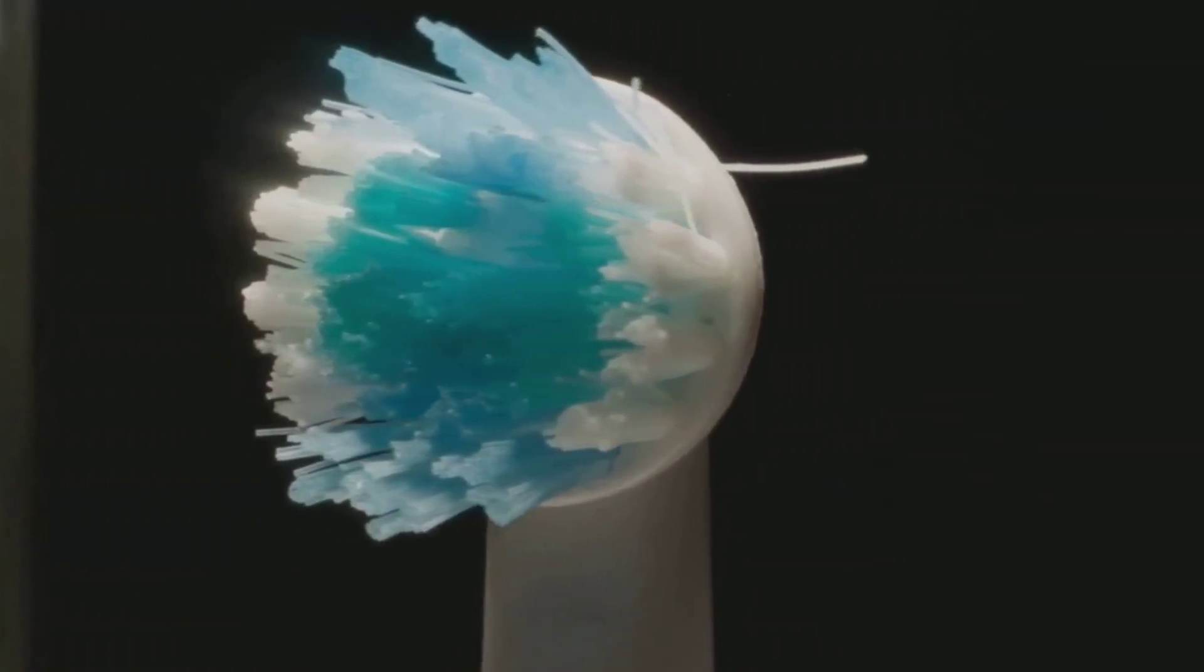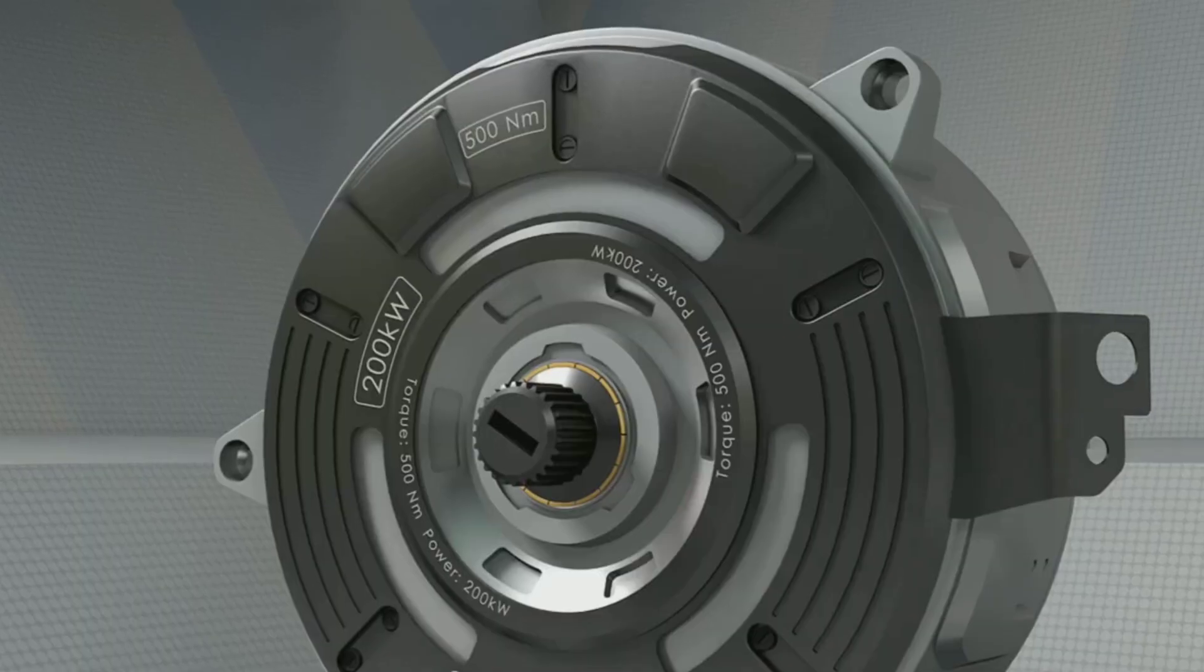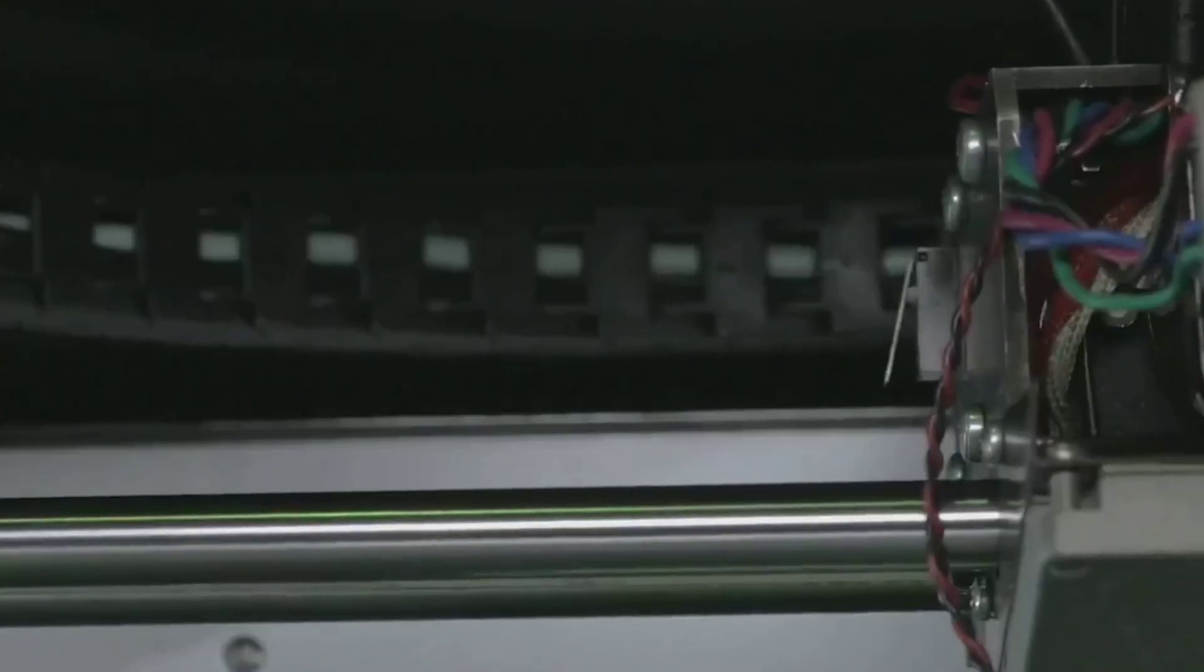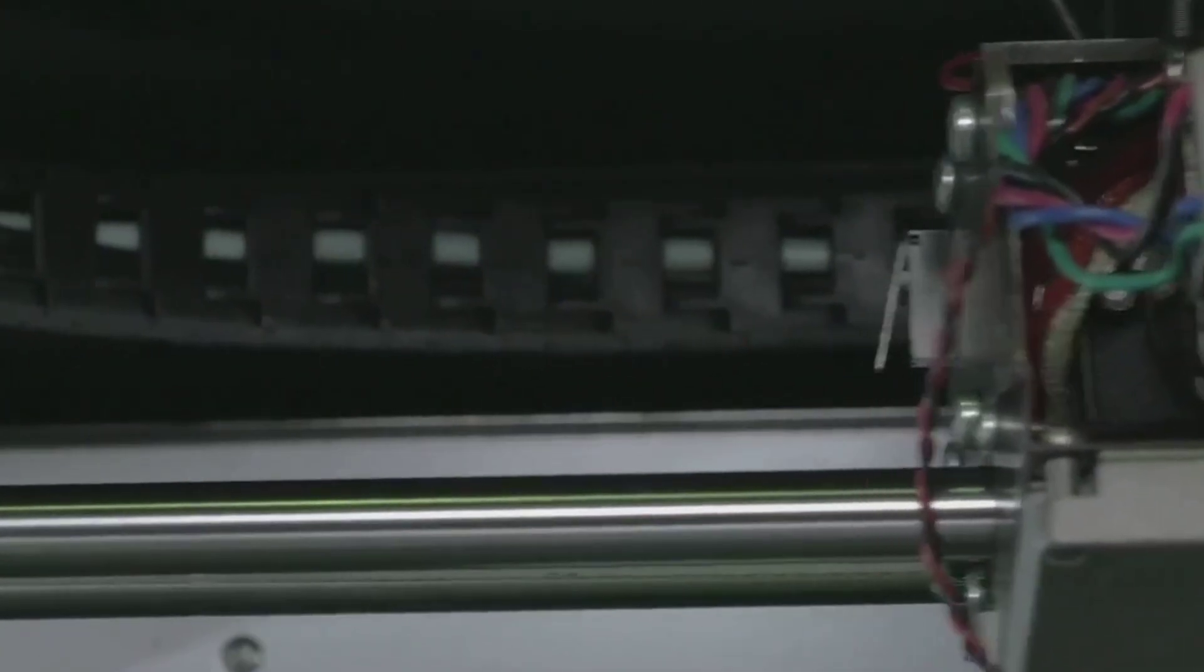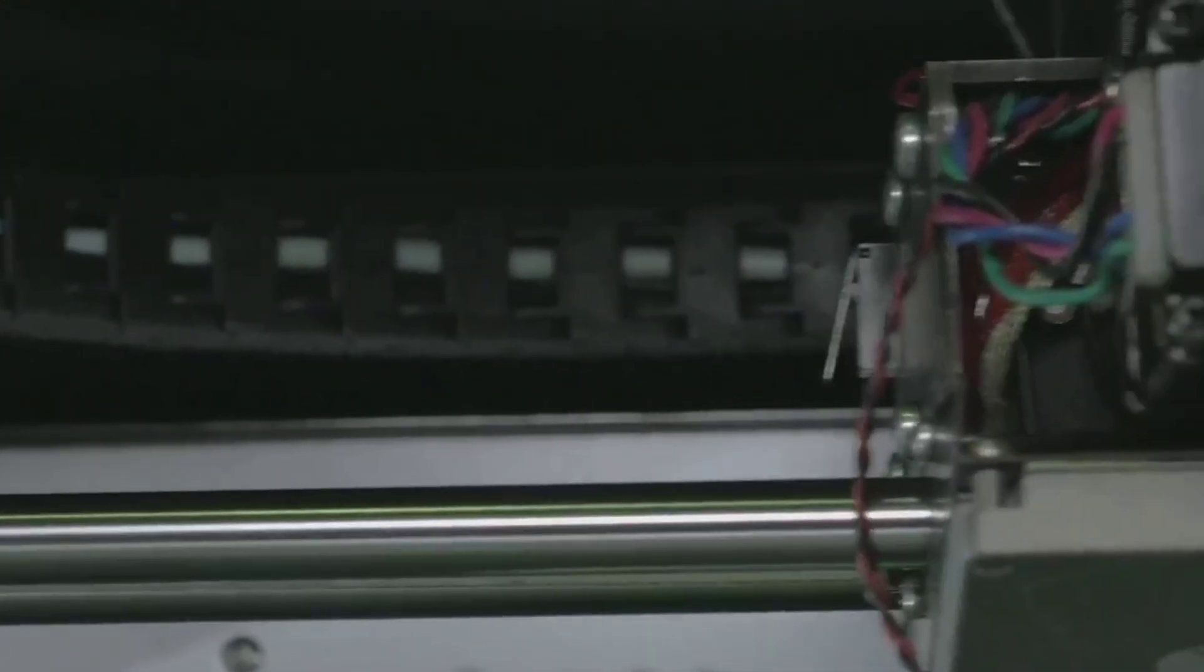Ever wondered what makes your electric toothbrush buzz or your remote-controlled car zip around? The answer is the DC motor. These tiny powerhouses are hidden inside countless gadgets we use every day, quietly turning electricity into motion.